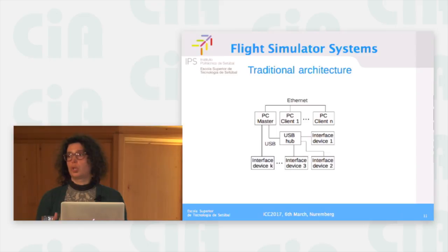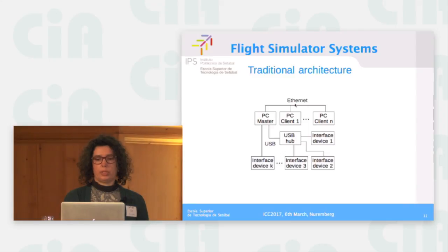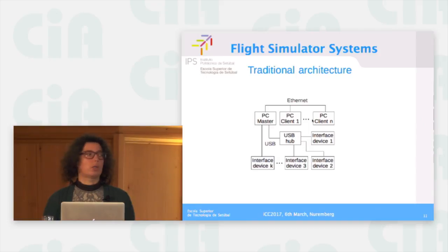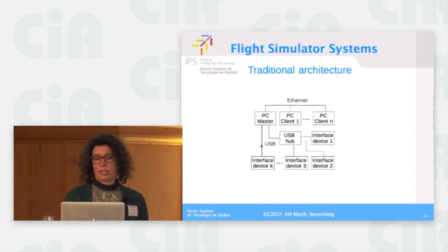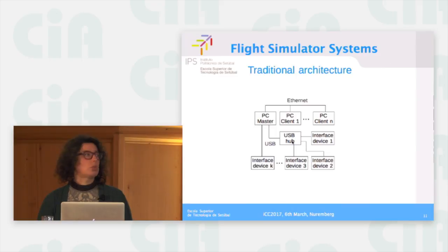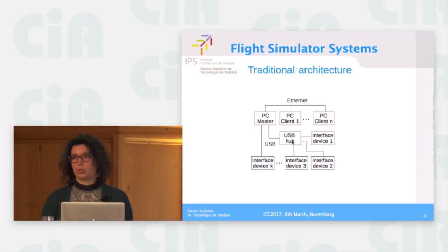The first thing we did was look at the architecture used in their flight simulator. They used a lot of personal computers connected by an Ethernet network. The main computer runs the main simulation software and the others run add-ons, mostly visual ones simulating other parts of the cockpit. Interface devices are connected through a serial connection — nowadays USB — and when there are many, they're connected using a USB hub. This architecture is not very scalable; when there are many devices, it tends to be a cabling nightmare.